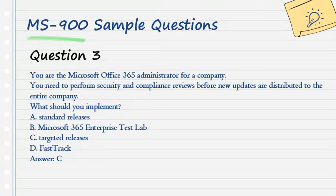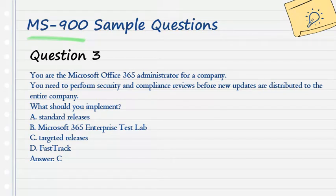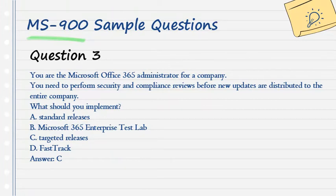Question 3. You are the Microsoft Office 365 Administrator for a company. You need to perform security and compliance reviews before new updates are distributed to the entire company. What should you implement? A. Standard Releases. B. Microsoft 365 Enterprise Test Lab. C. Targeted Releases. D. Fast Track. Answer: C.